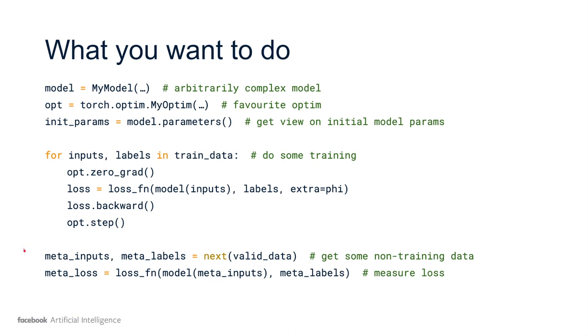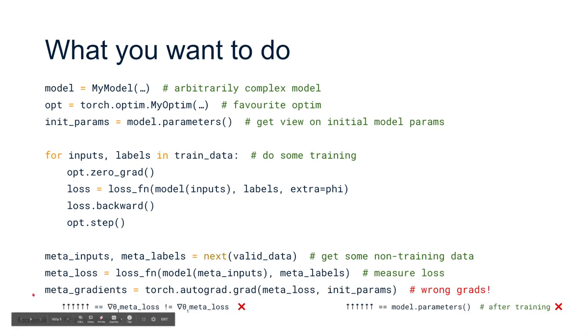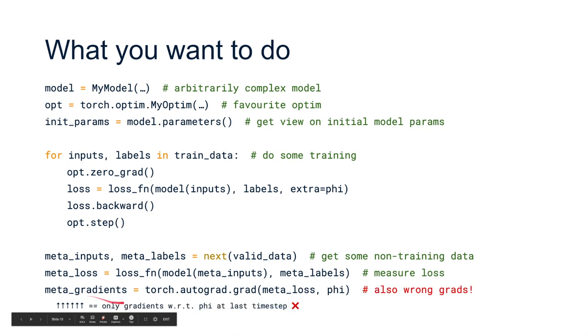After we've trained our model sufficiently, we want to get inputs and labels from our validation data and compute the meta loss. We run the meta inputs through the model and evaluate the loss with regard to the meta labels. We'll assume phi doesn't play a part in the validation loss. Now if we want to take the meta gradients with regard to the initial parameters, you'll observe that in PyTorch, these will be the wrong gradients. Even though it seems like there's a path from the initial parameters through the training loop to the meta gradients, these aren't defined. Likewise, if you wanted to take the gradient of the meta loss with regard to phi, there is no gradient path even though they mathematically should exist.